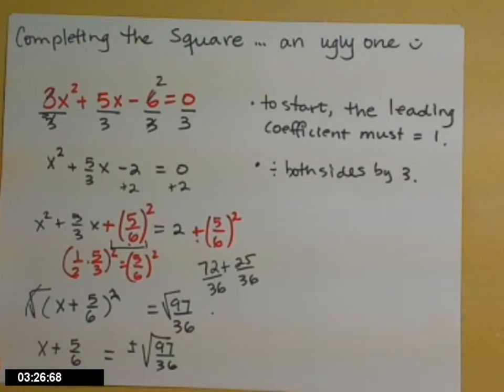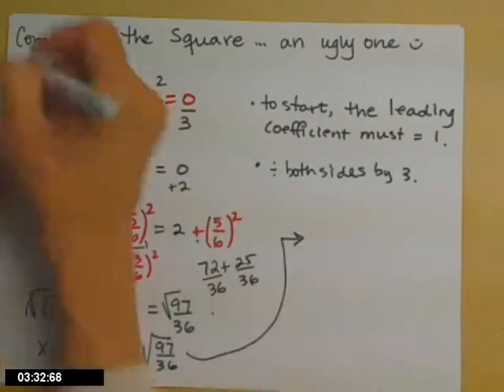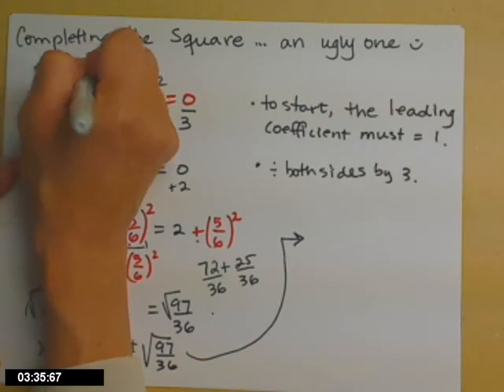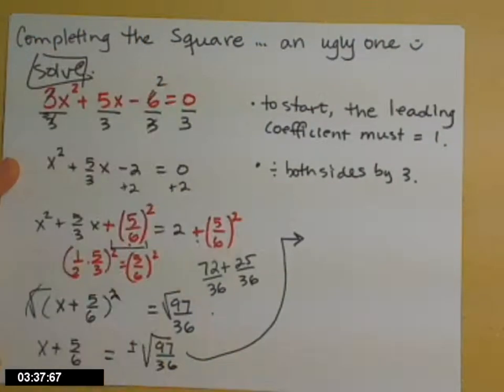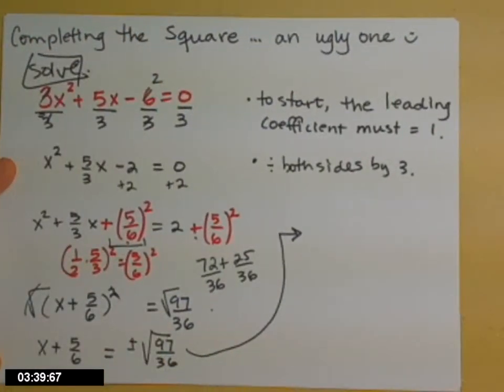It just gives you that x plus 5 sixths. And then on the right, it looks like we can tidy a bit. We're not done. The instructions that I didn't write are solve. And when the instructions are solve, you're not done until you have x equals, and I'm not there yet.